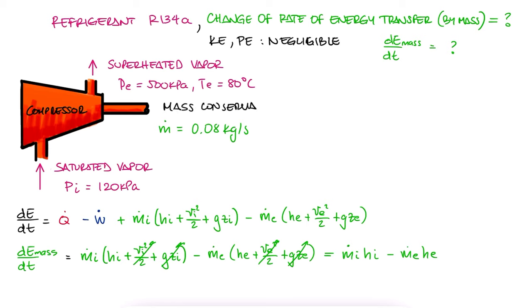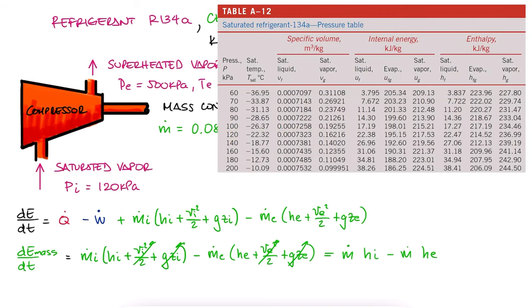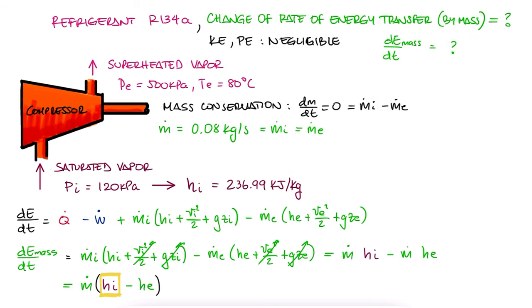And from the mass conservation, the mass flow rate is the same at the inlet and at the exit. We look up the specific enthalpy for saturated vapor of R134A at 120 kilopascals and write it down. That's our specific enthalpy inlet value.